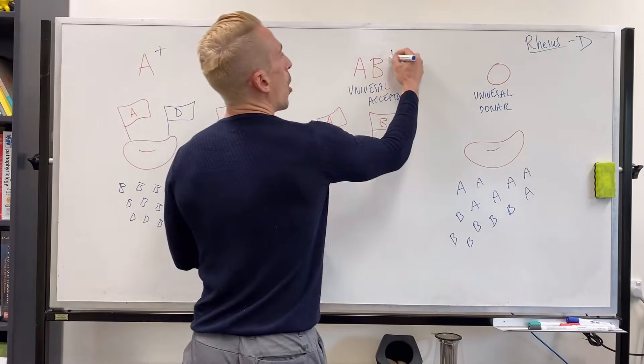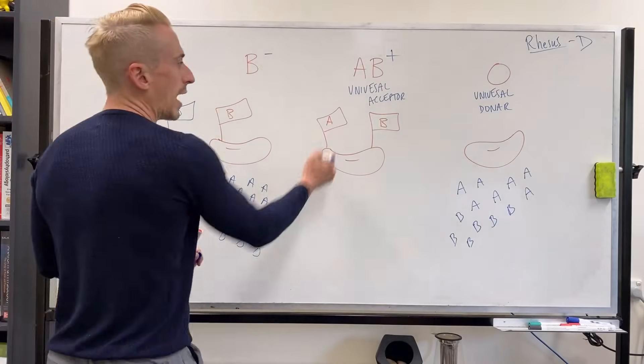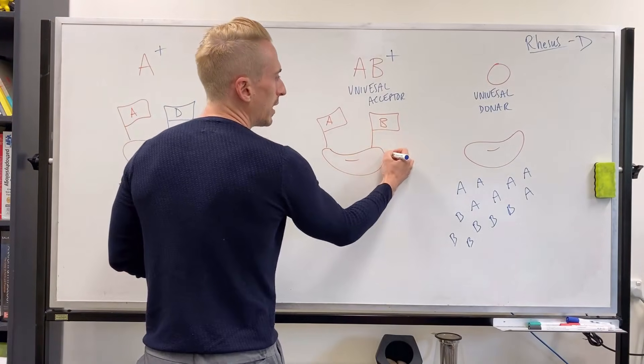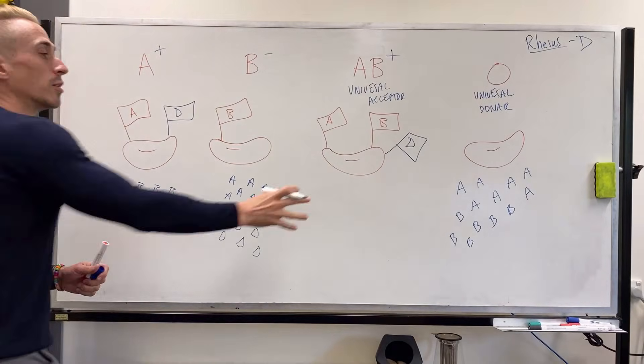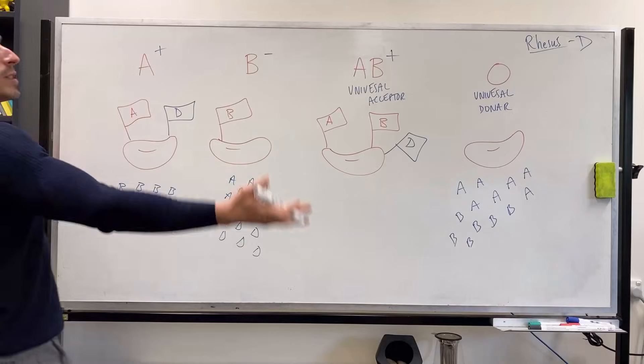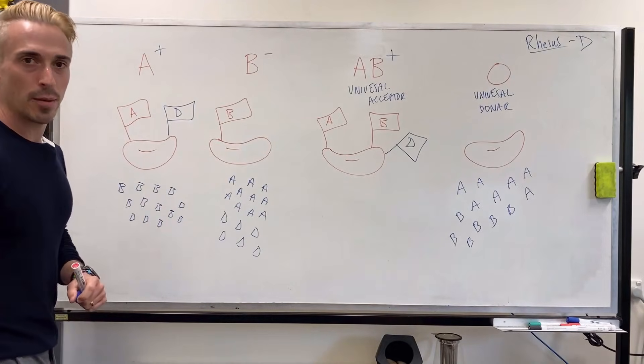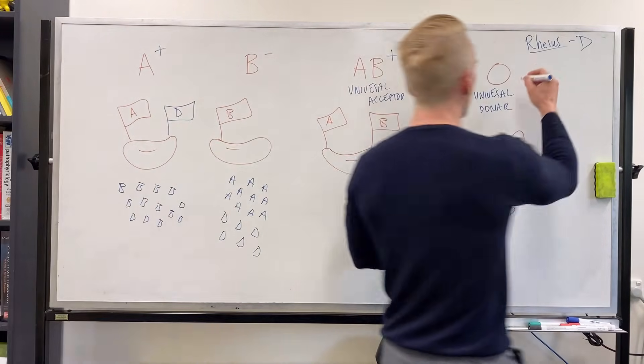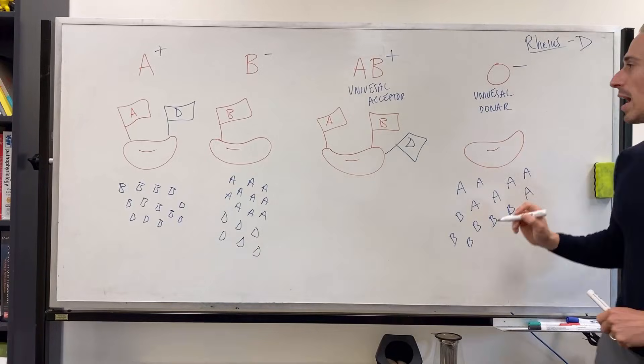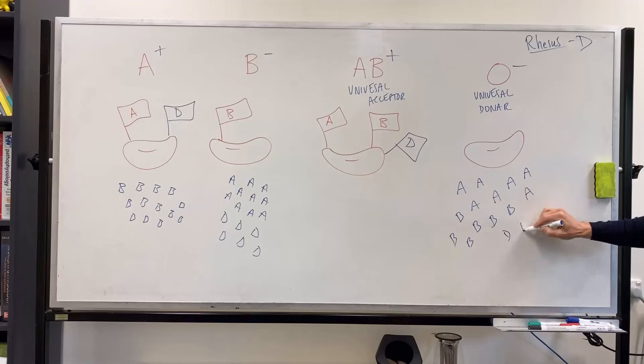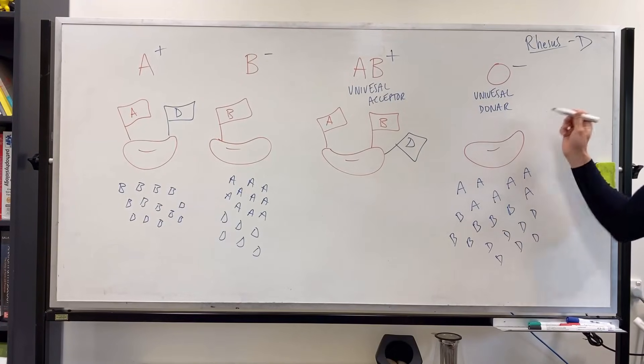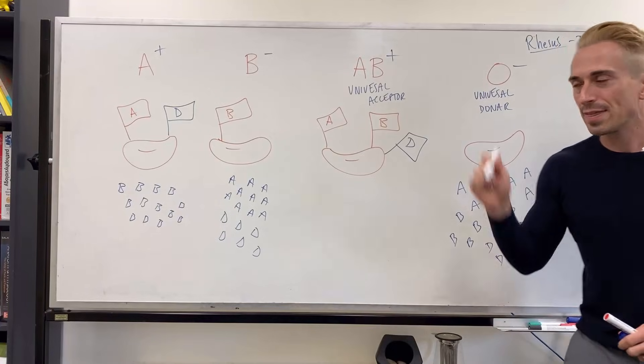Now if we look at AB positive, they have an A flag or antigen, B flag, and D or rhesus flag. So again, they don't create antibodies against anybody and they can receive every type of blood imaginable. If somebody is O negative, they don't have an A flag, don't have a B flag, and they still don't have a D flag. They can't receive blood from anyone but themselves, but they can donate their blood to everybody.